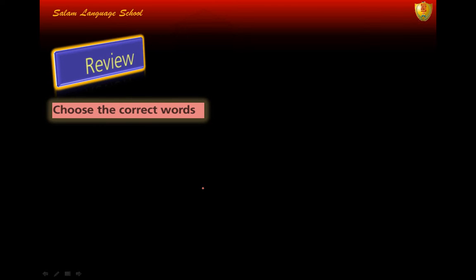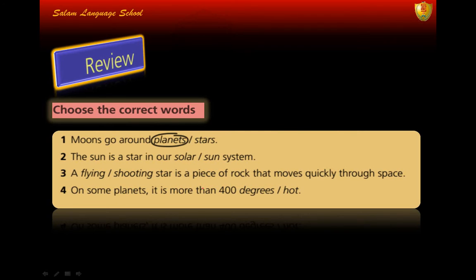Now let's check your students book. The first exercise on the review page is to choose the correct words. Number one: moons go around planets — already given. Number two: the sun is a star in our solar system. Number three: a shooting star is a piece of rock that moves quickly through space. Number four: on some planets it is more than 400 degrees.